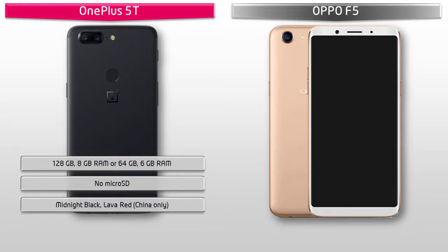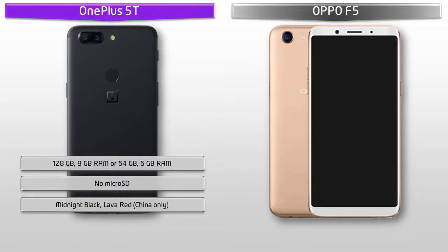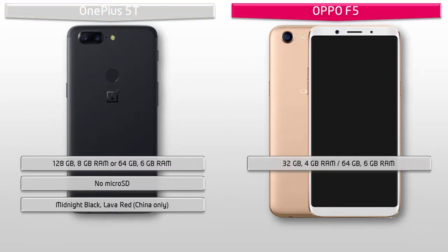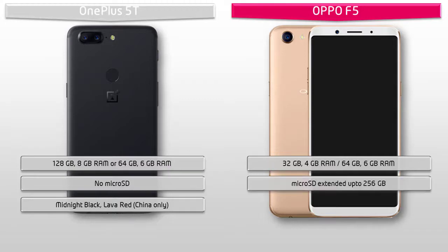OnePlus has produced this device in only two colors — Midnight Black and Lava Red. Lava Red will only be available in China. Moving on to Oppo F5, it is available in 32 GB ROM with 4 GB RAM, and 64 GB ROM with 6 GB RAM, and also supports microSD up to 256 GB. The 64 GB with 6 GB RAM variant is available only in red color.